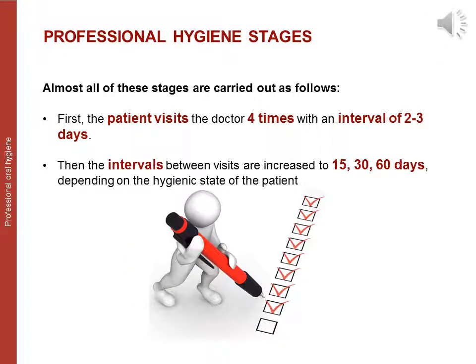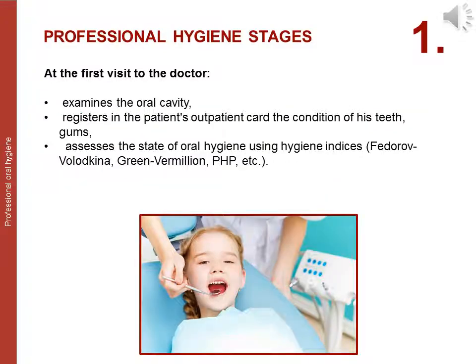Almost all stages are carried out as follows: first, the patient visits the doctor four times with an interval of two or three days; then intervals between visits are increased to 15, 30, or 60 days depending on the patient's hygienic state. At the first visit, the doctor examines the oral cavity, registers the patient's clinical card, assesses the condition of teeth and gums, and evaluates oral hygiene using hygiene indicators such as Volodin-Green-Vermillion, PHP, Kuznetsov, etc.